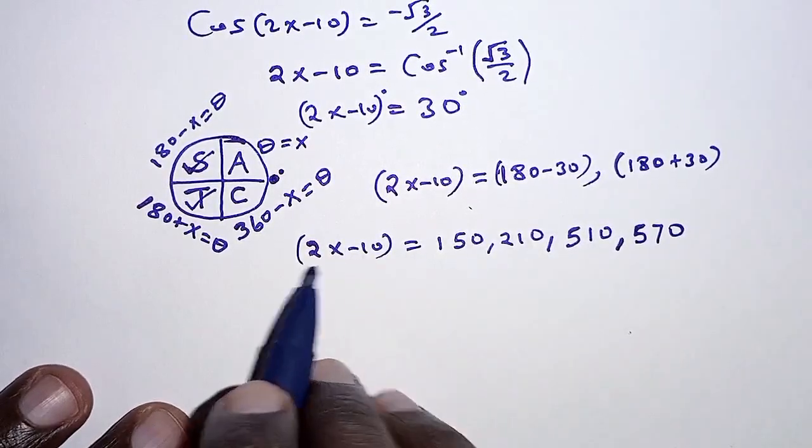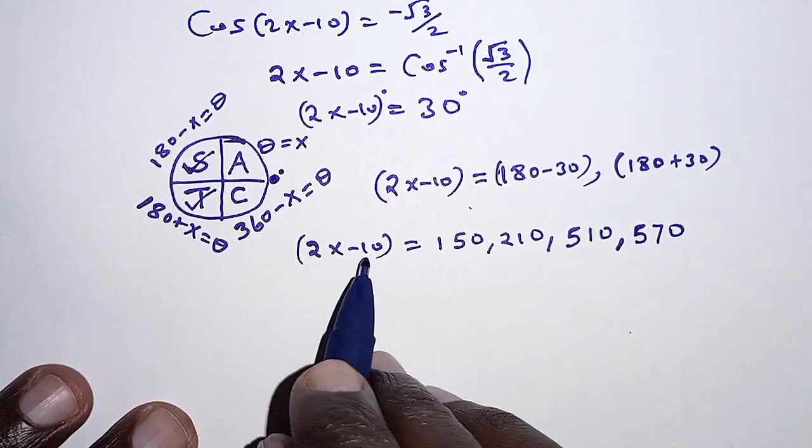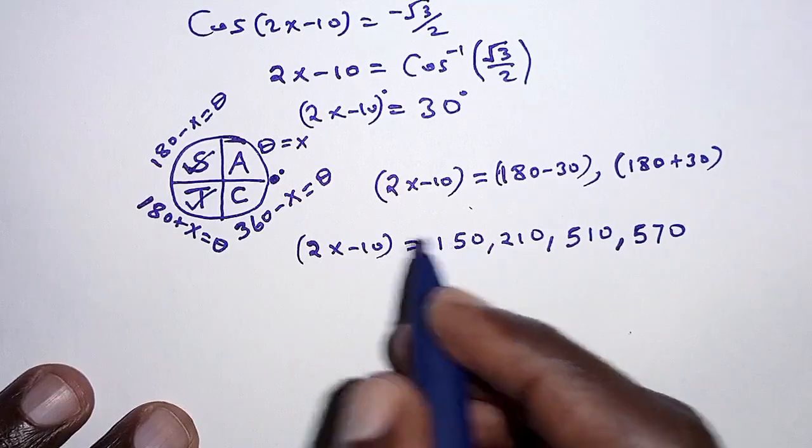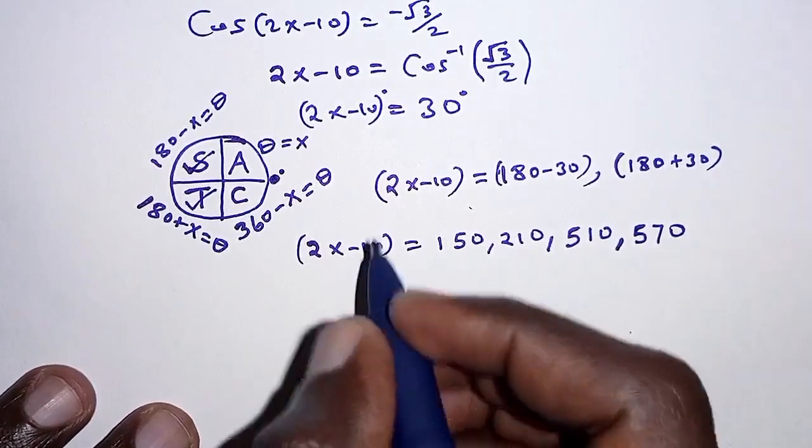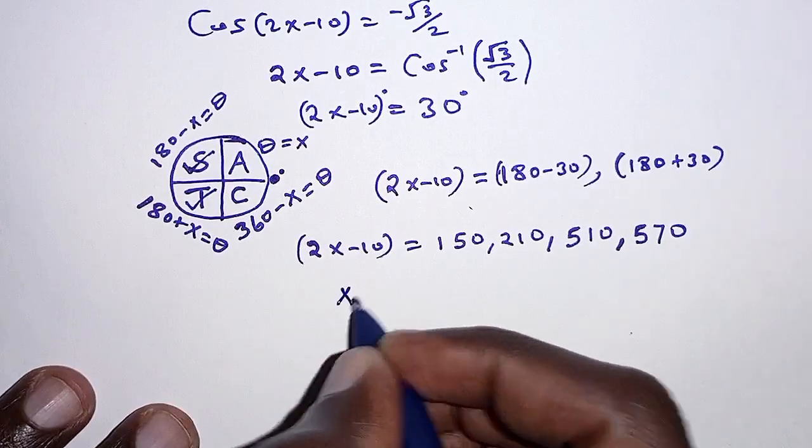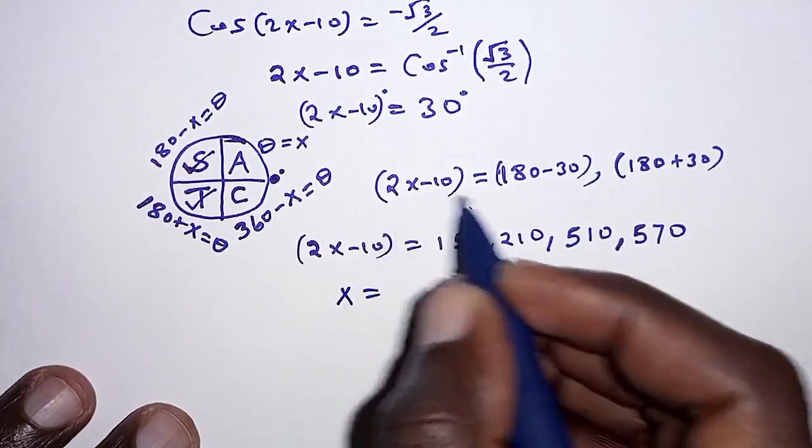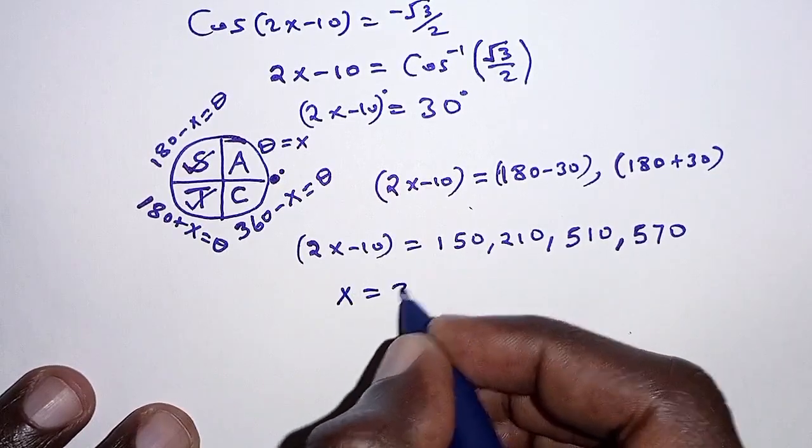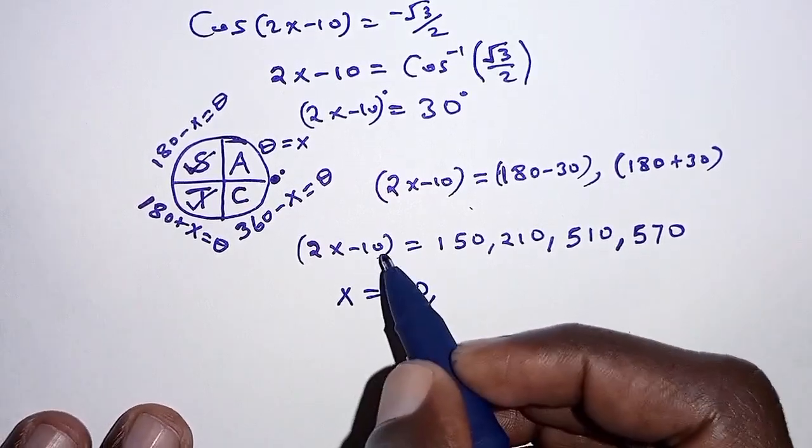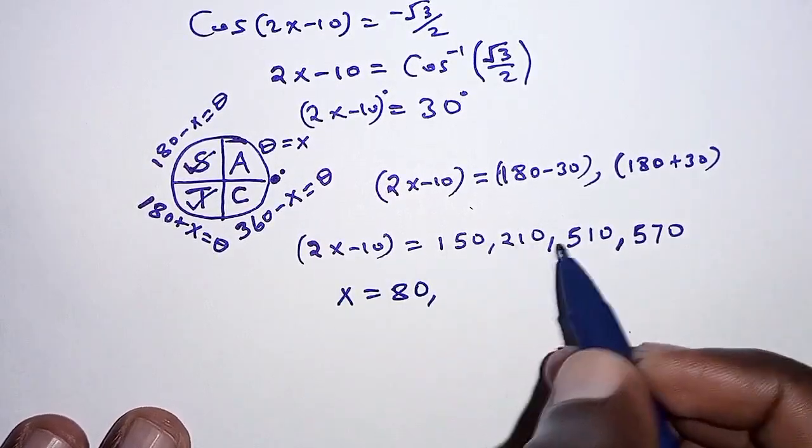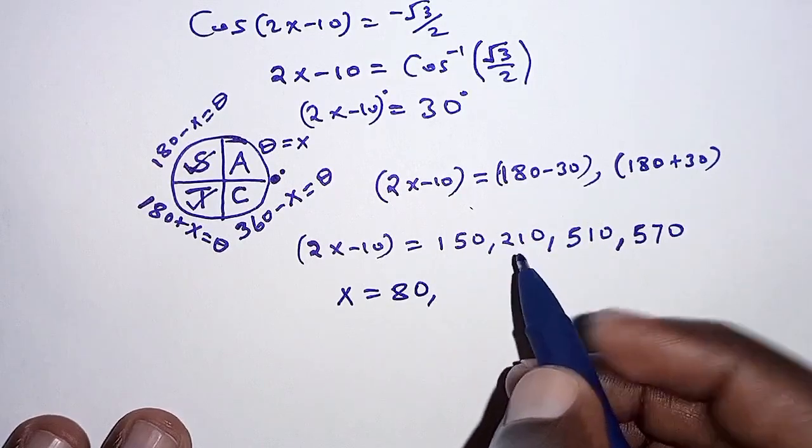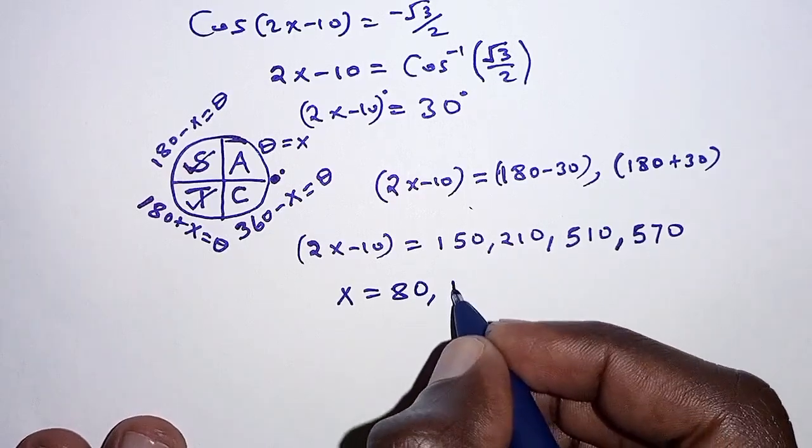Well with these, we can equate them in turns to 2x minus 10. So if we equate 2x minus 10 to 150 and solve for x, the value of x will become, so negative 10 comes here so that we have 160, 160 divided by 2, that is 80. For the next one, we equate to 210, so we have 220, 220 divided by 2, that is 110.